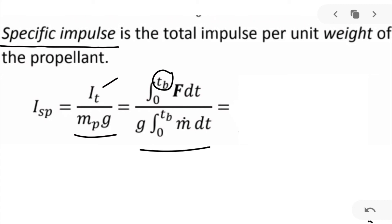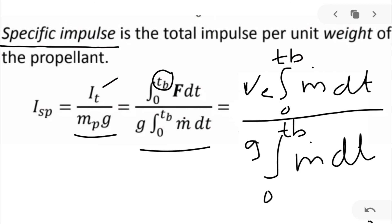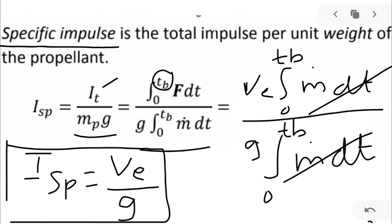We derive thrust is equal to m dot Ve. Taking Ve outside the integration, 0 to Tb m dot dt divided by g times 0 to Tb m dot dt get cancelled. We get Isp is equal to effective velocity divided by gravitational acceleration. This is our Isp, which means specific impulse.